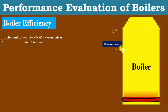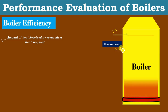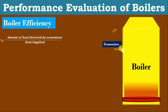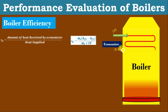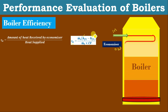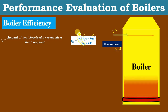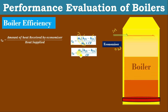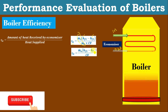To find out the efficiency of the economizer, that is the amount of heat received by the economizer: the mass of water supplied multiplied by the enthalpy difference gives the amount of heat received by the economizer, divided by heat supplied, that is Mf × Cv. So, efficiency of the economizer = mass of steam generated × (outlet economizer enthalpy − inlet economizer enthalpy) / (Mf × Cv). This equation can be written as: efficiency of economizer = actual evaporation ratio × (outlet enthalpy of economizer − inlet enthalpy of economizer) / Cv.